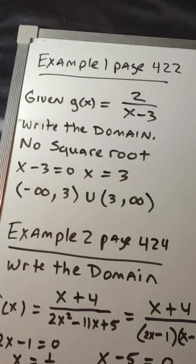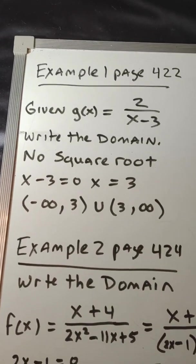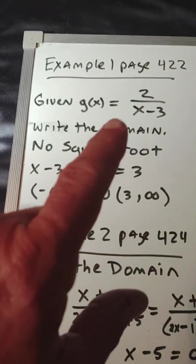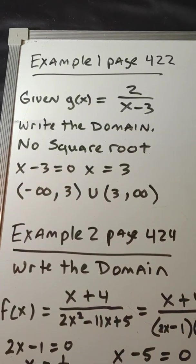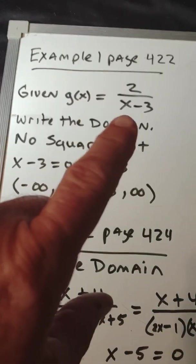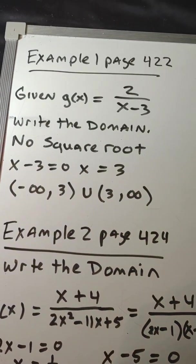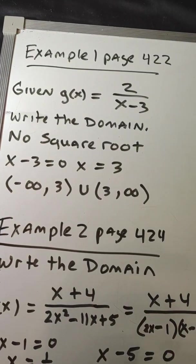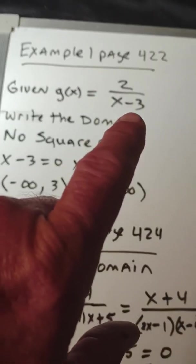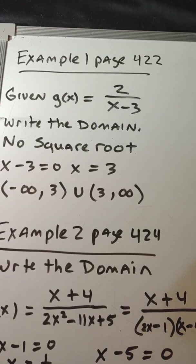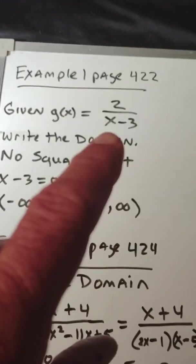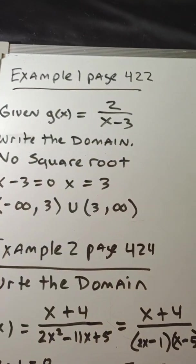The first thing is finding the domain of a rational function or rational expression. We are not concerned with the numerator — the numerator is no problem. I'm only concerned with the denominator, and we have to ask ourselves two questions. Is there a square root? If there is, we set the expression under the square root greater than or equal to zero, and that gives us our domain. If there's no square root, we take the factors in the denominator, set them equal to zero, and solve. This tells us the value that x cannot be, because it would give us zero in the denominator, making the expression undefined.